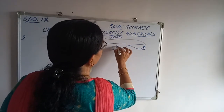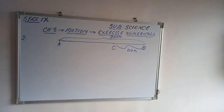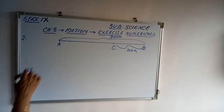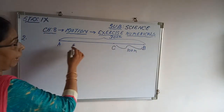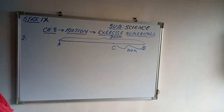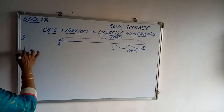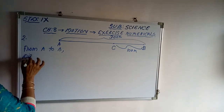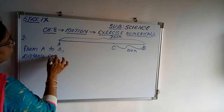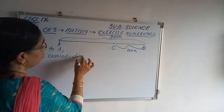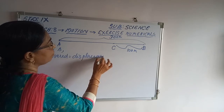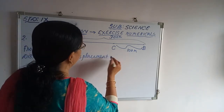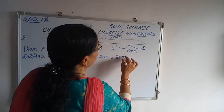From B to C, it is 100 meters. From A to B, since it is a straight line, the distance covered and the displacement will be the same — the direction remains the same — that is 300 meters. The time taken from A to B is 2 minutes 30 seconds, which equals 150 seconds.